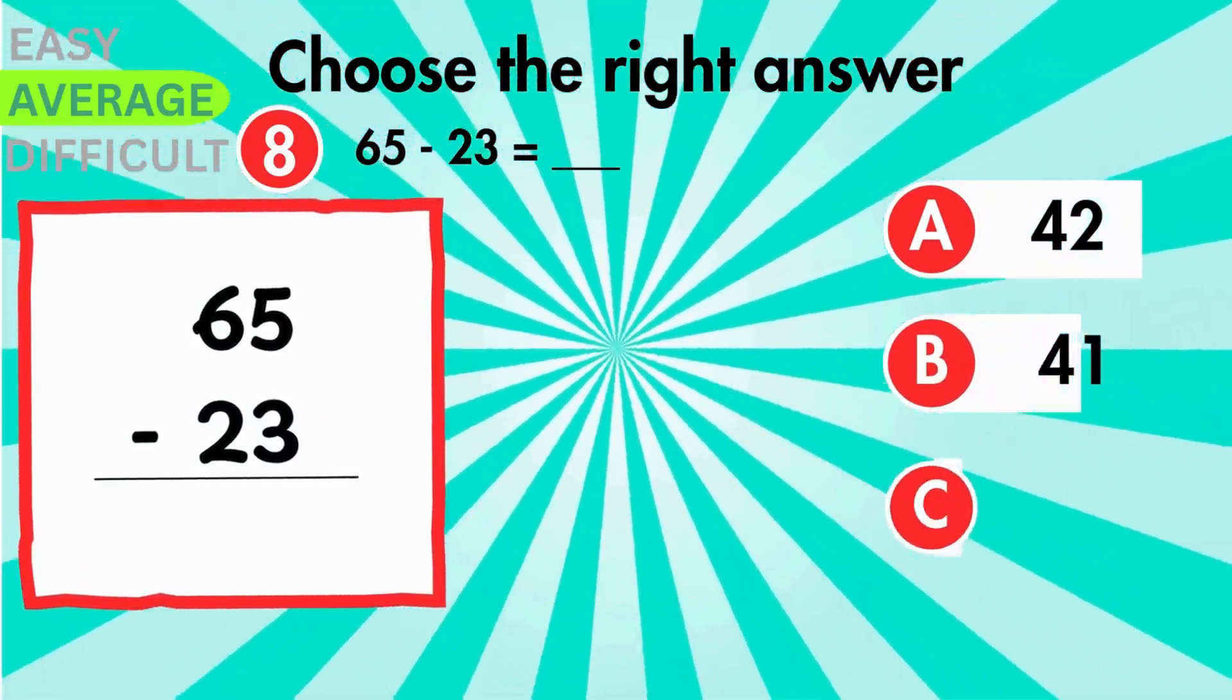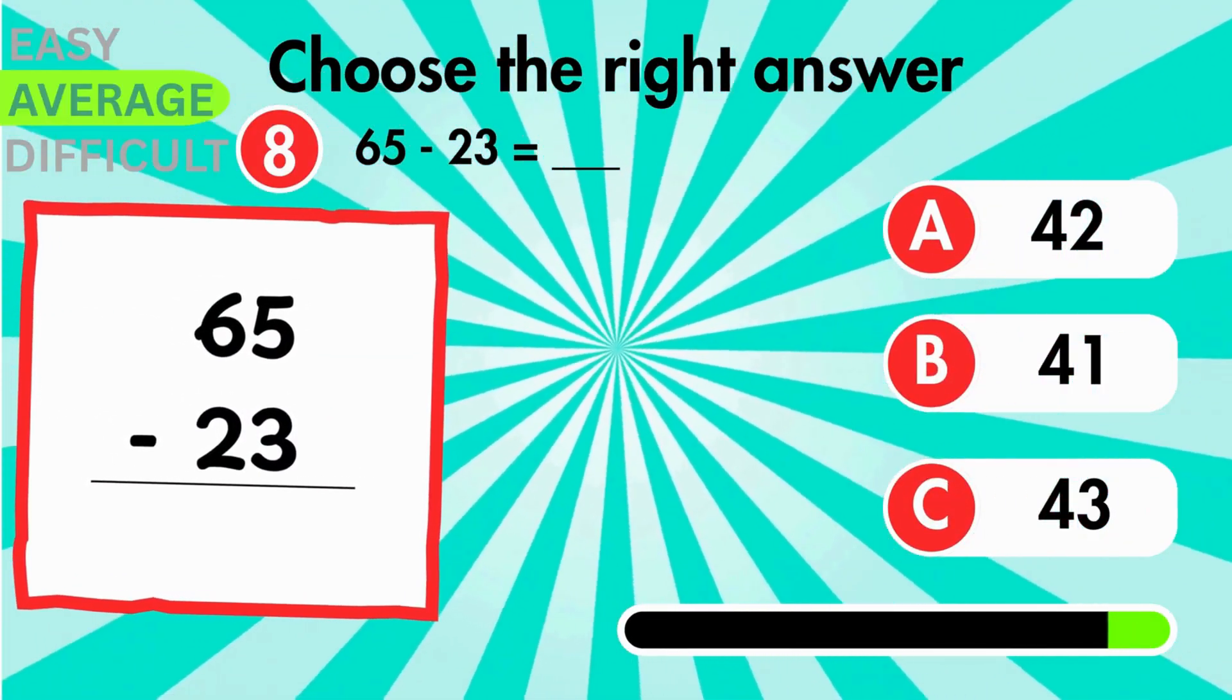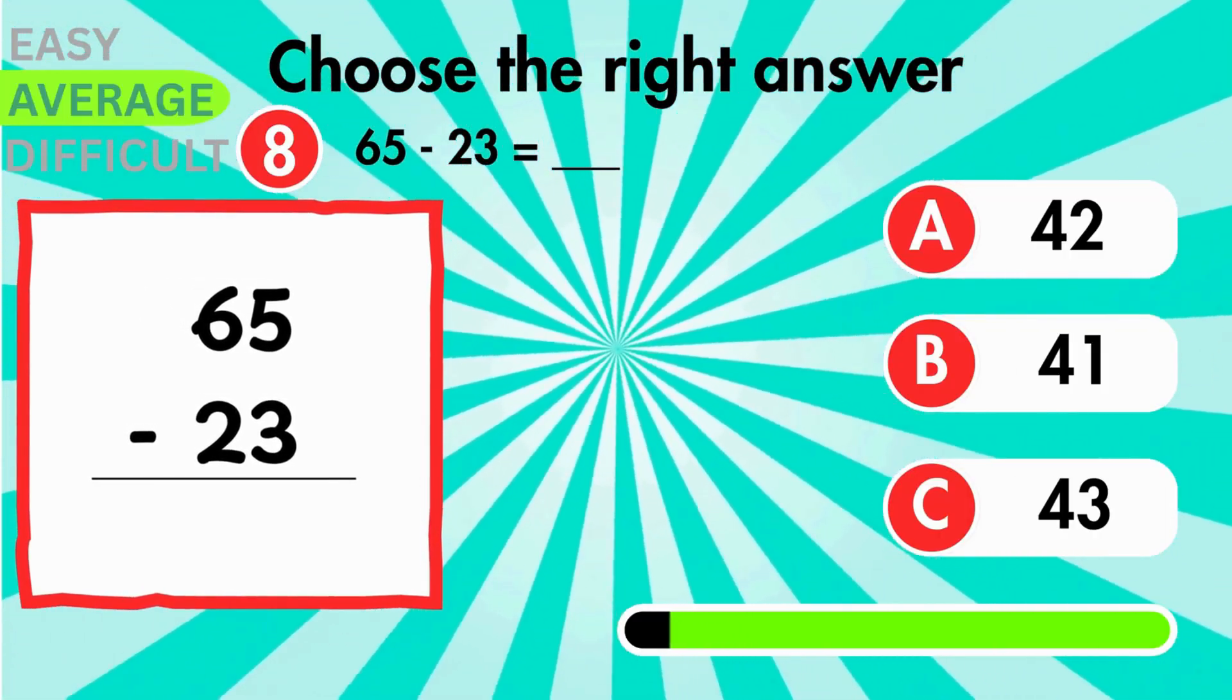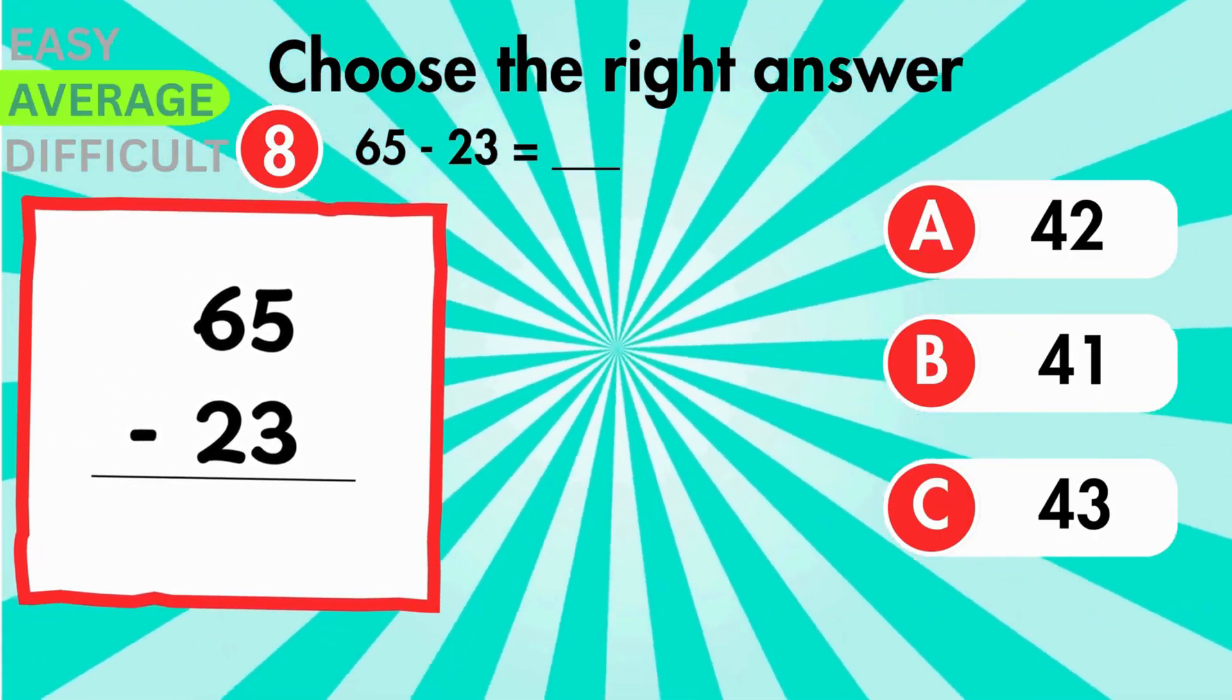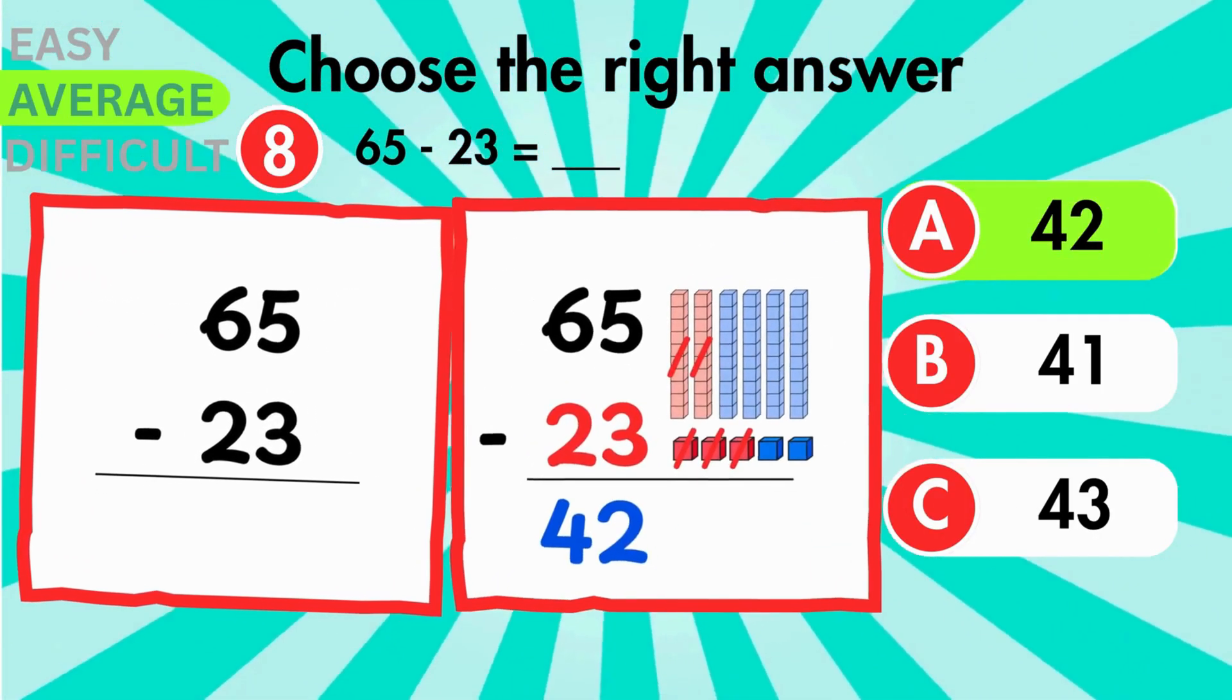Subtract 23 from 65. What number remains? That leaves 42.